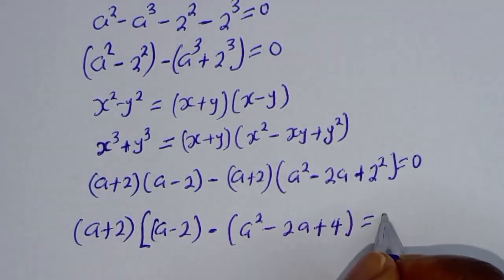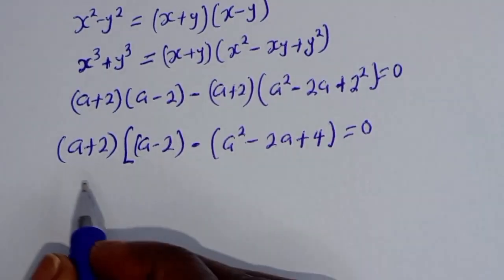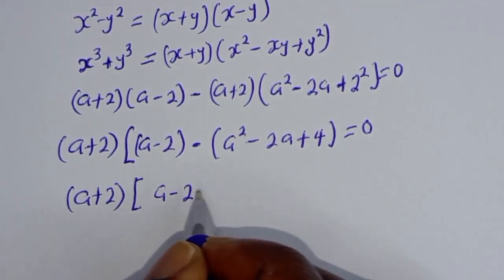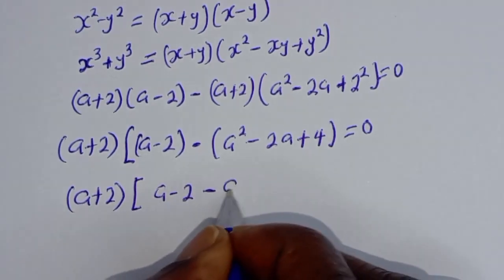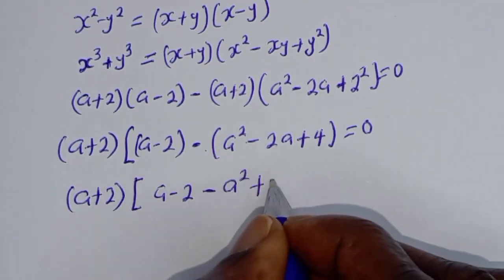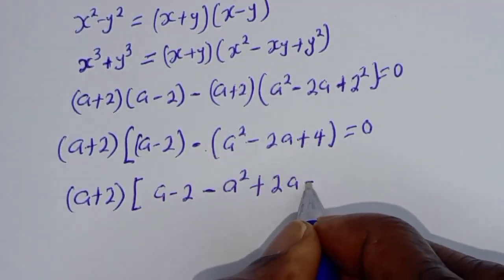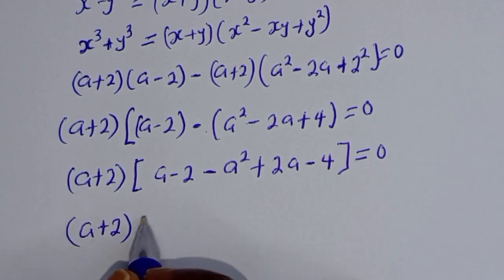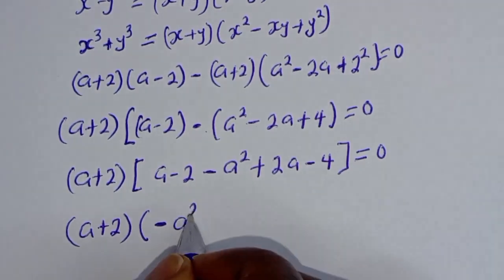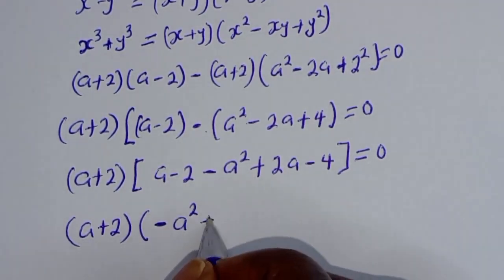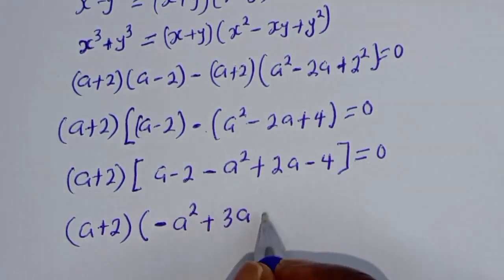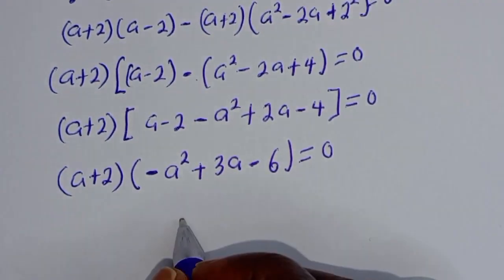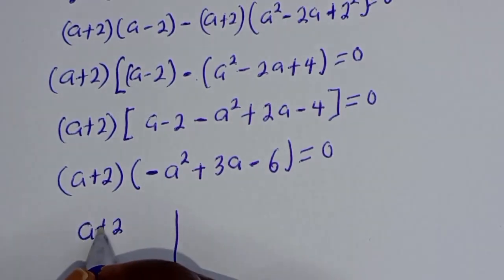Factoring out the common factor (a+2): (a+2)[(a-2) minus (a squared minus 2a plus 4)] equals 0. Expanding inside the bracket: a minus 2 minus a squared plus 2a minus 4, which simplifies to minus a squared plus 3a minus 6.